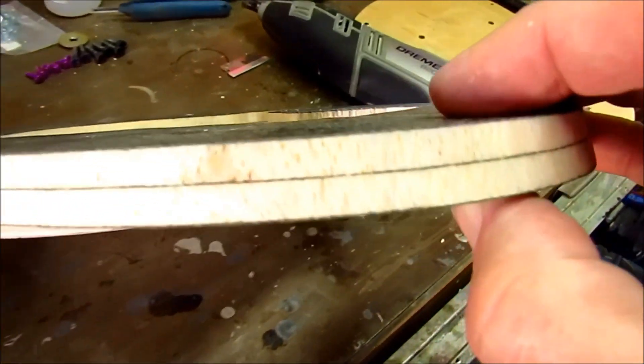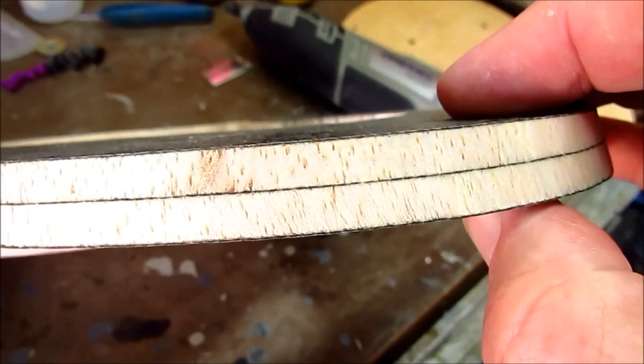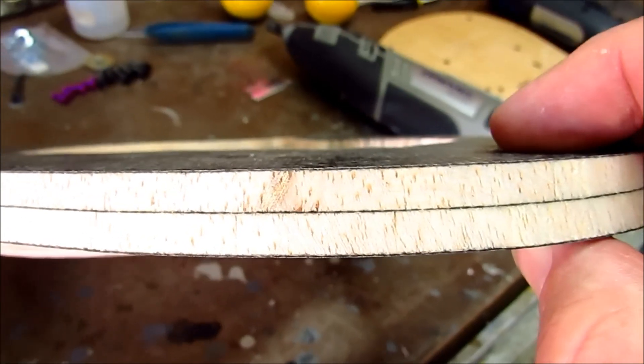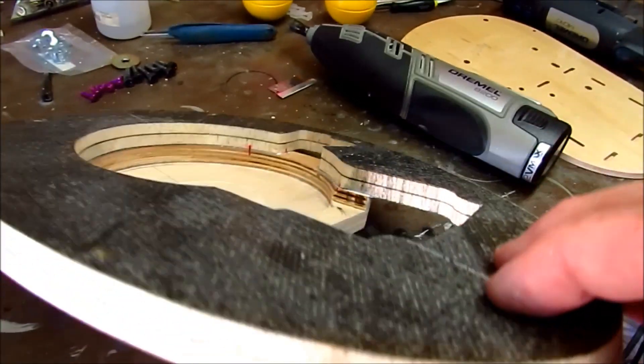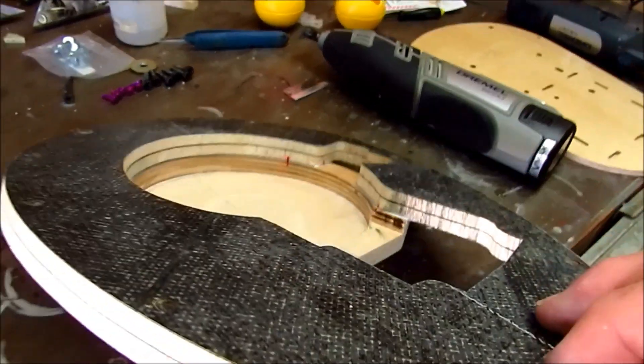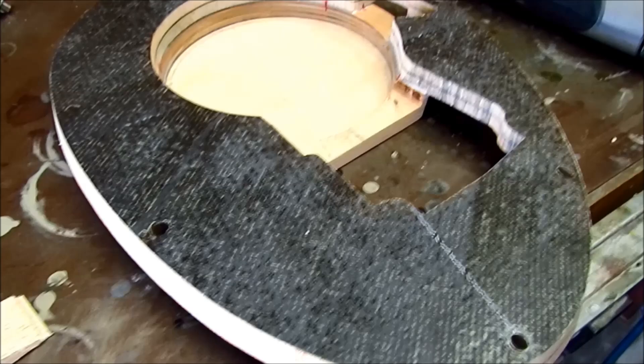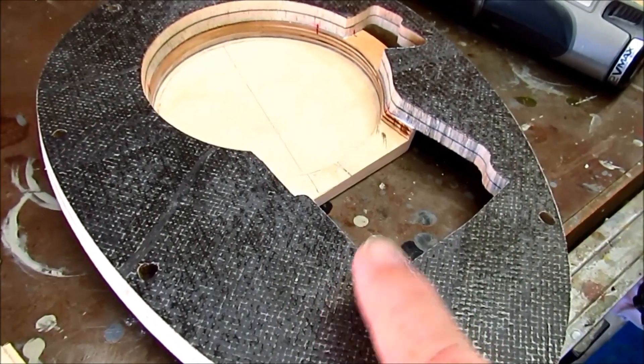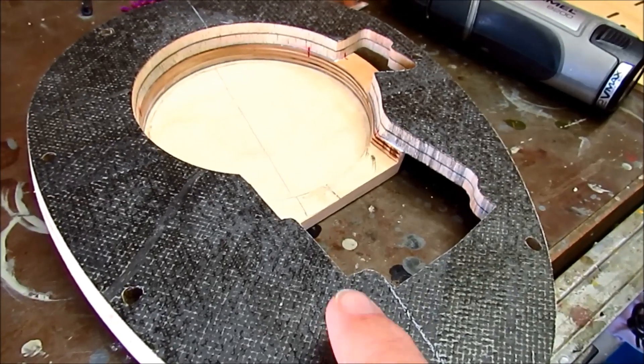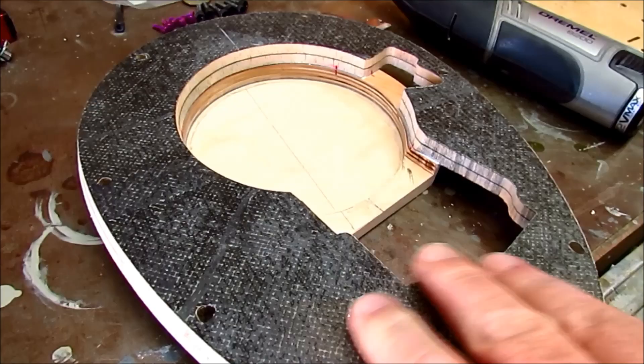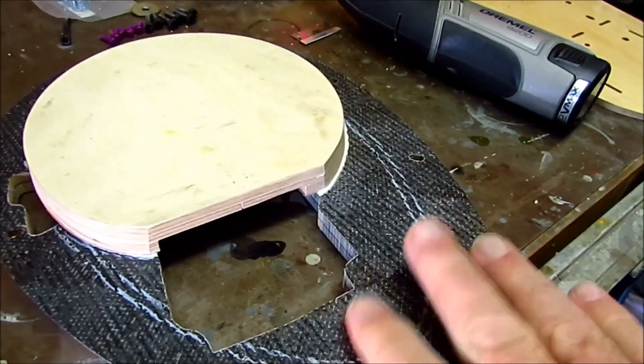This is two layers of quarter-inch balsa, end grain balsa. In the middle there is one layer of nine ounce carbon, 90-90. This is one layer of nine ounce carbon, 90-90, with a layer of I can't remember if it's three ounce or five ounce fiberglass on top of it, just to encapsulate everything. And the same thing on the back side.